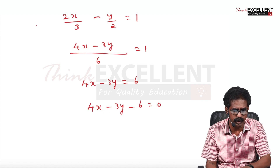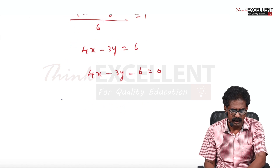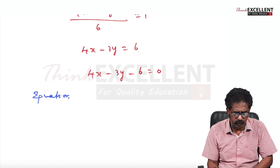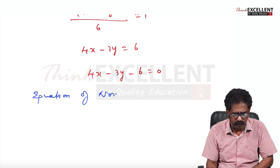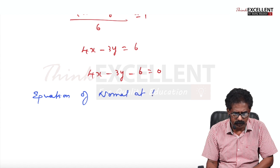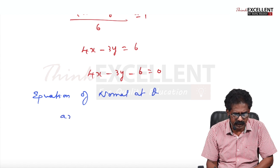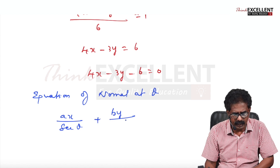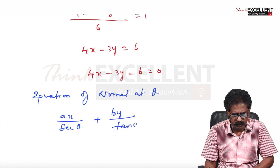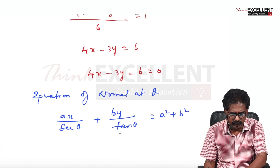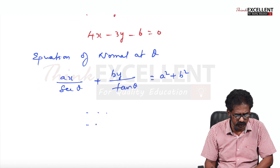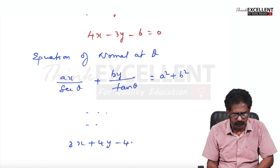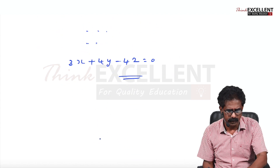That is the equation of tangent. Now equation of normal to the hyperbola at θ: the formula is (ax/secθ) + (by/tanθ) = A² + B². Substitute all values — I am leaving the calculation to you. Check whether you get the correct answer.